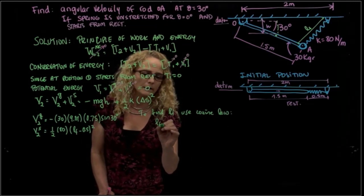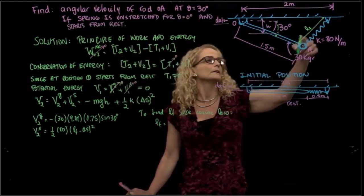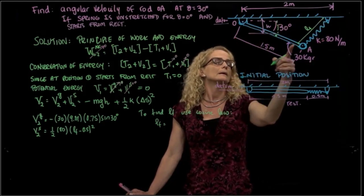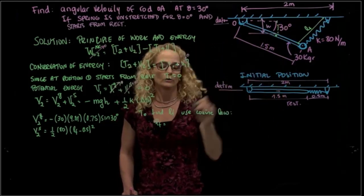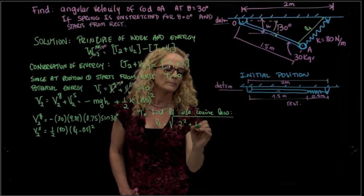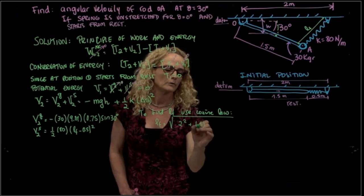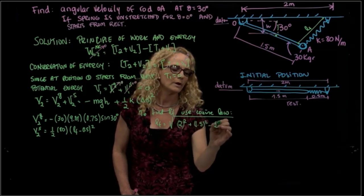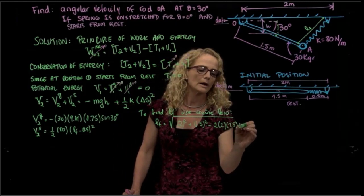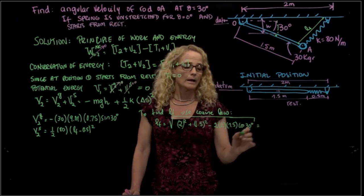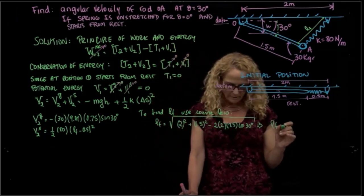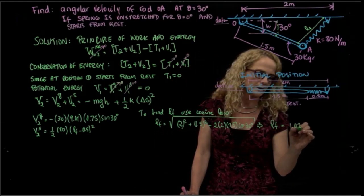We know that that final length will be, so that final length, we have that angle, so we will use this length and this length, so it will be square root of 2 squared plus 1.5 squared minus 2 times 2 times 1.5 cosine of 30. And that gives me a length equals to, I have it right here, so it's equal to 1.027.